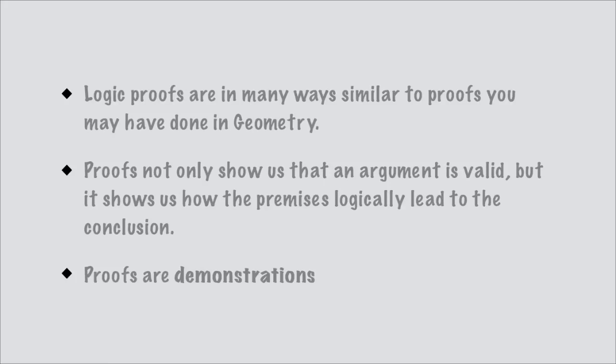The fact that you can get from those premises to that conclusion not only shows that the argument is valid, but it shows you how they logically lead from one premise to that particular conclusion. When looking at premises in English, we can sort of see the structure and understand how one premise leads to another. But in logic, we want a demonstration — something that explicitly tells me how I go from these premises to this conclusion. Proofs are demonstrations of how we get from a set of premises to a particular conclusion.